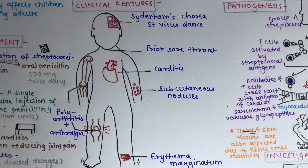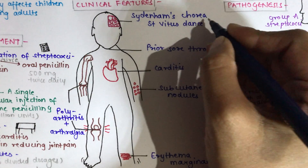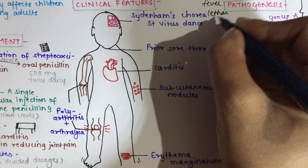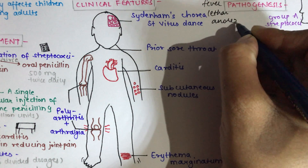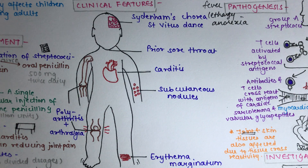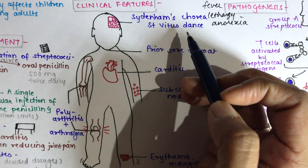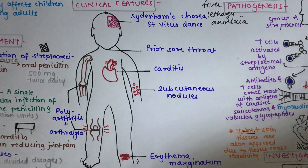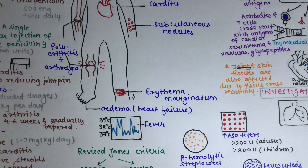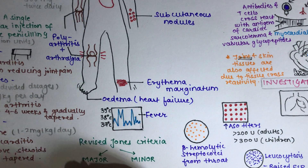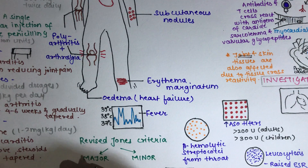Moving to clinical features. The manifestations of acute rheumatic fever include fever, lethargy, and anorexia, along with symptoms due to involvement of the heart, joints, skin, and CNS. These manifestations generally occur two to three weeks after streptococcal pharyngitis. Diagnosis is based on the updated Jones criteria, which has major and minor criteria.